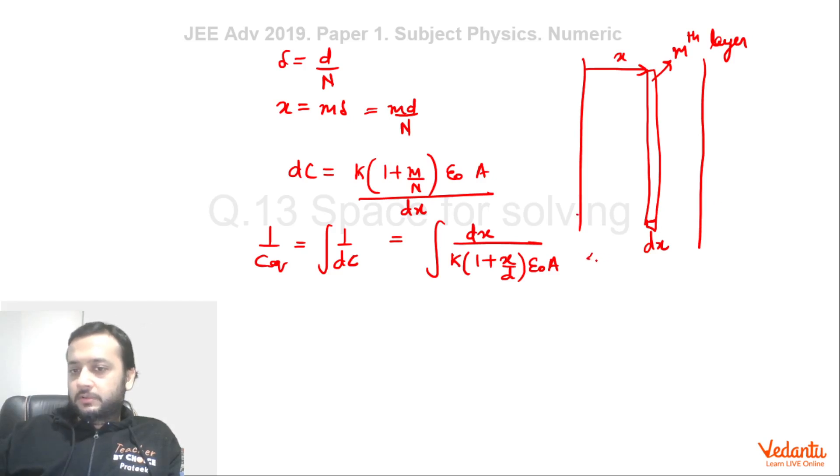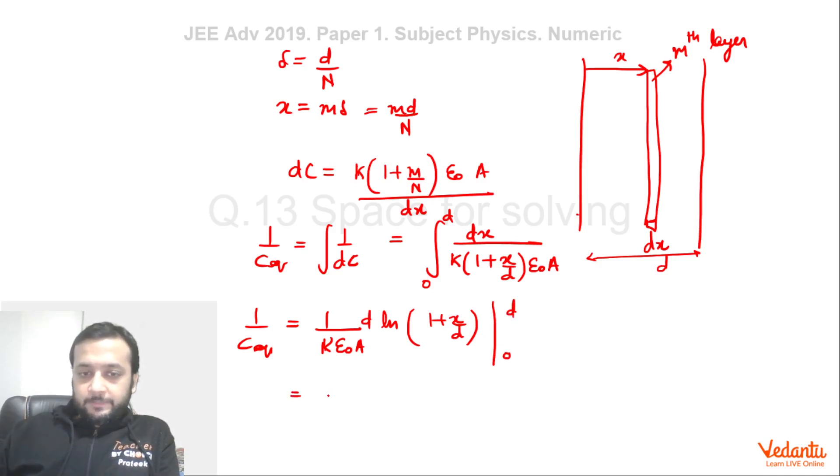So from here, 1/C_eq comes out to be (1/Kε₀A) times the integral of dx/(d(1 + x/d)), which when integrated becomes (1 + x/d) divided by (1/d), and hence basically it becomes (d/Kε₀A)·ln(2) minus ln(1), which is 0.